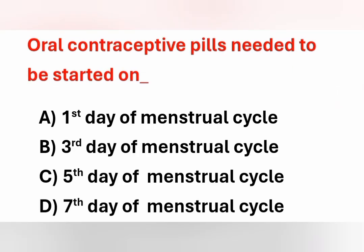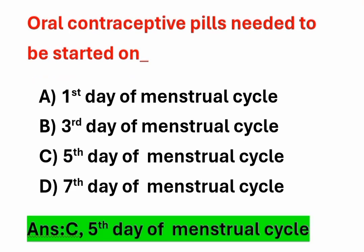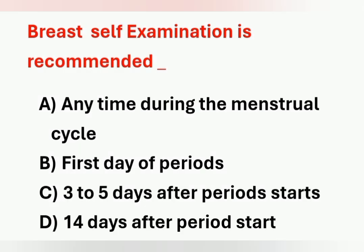Next question: oral contraceptive pills need to be started on which day? Option A – first day of the menstrual cycle. Option B – third day. Option C – fifth day. Option D – seventh day. Oral contraceptive pills should be started on the fifth day of the menstrual cycle. Option C is the correct answer.